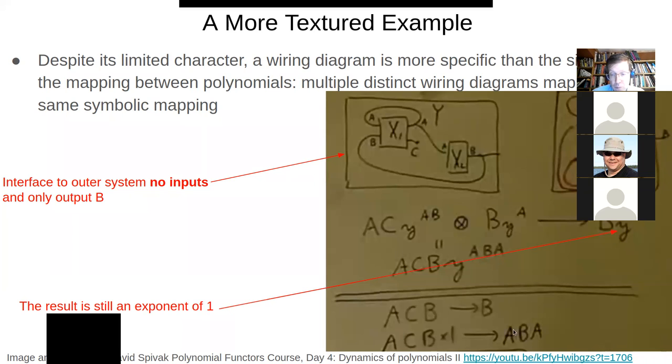So here, we could think of that mapping in the reverse direction, from the right to the left, as it were, as ACB cross one. The one is from the Y to ABA.